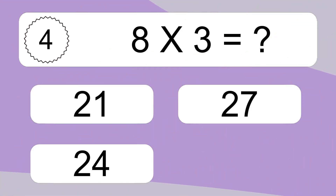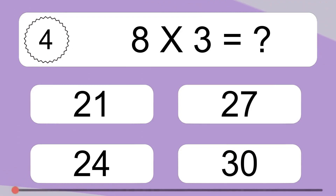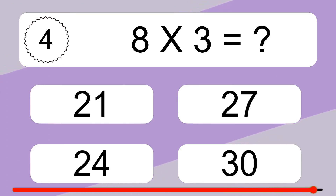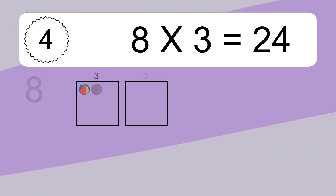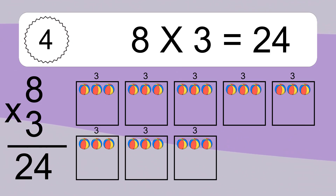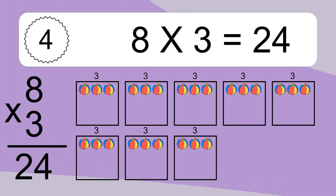Eight times three equals what? Eight times three equals 24. We have eight boxes, and each box has three colorful balls inside. If you count all the balls in all the boxes together, you will have eight times three balls. This equals 24 balls.